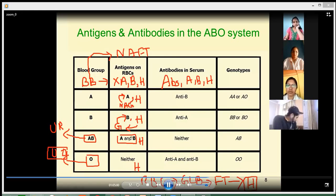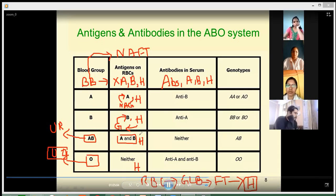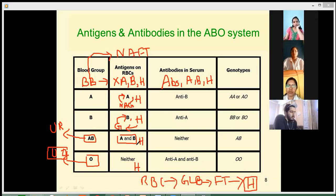Blood group AB has A antigen present, B antigen present, and also H antigen present.